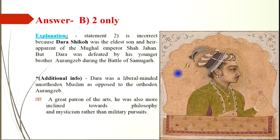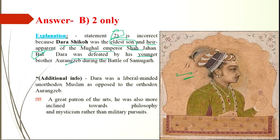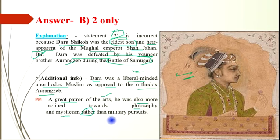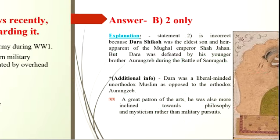Statement 2 is incorrect because Dara Shikoh was the eldest son and apparent heir of the Mughal Emperor Shah Jahan. Dara was defeated by his younger brother Aurangzeb during the battle of Mughal succession. Dara was a liberal-minded, unorthodox Muslim, as opposed to the orthodox Aurangzeb, and a great patron of art. He was also more inclined towards philosophy and mysticism rather than military pursuits.